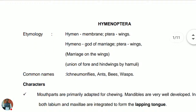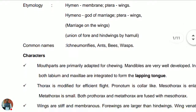Welcome dear friends. The order today is Order Hymenoptera, where the meaning of 'hymen' is membrane and 'ptera' means wings, so it becomes Hymenoptera. A second definition is 'Hymeno' meaning god of marriage and 'ptera' meaning wings, so Hymenoptera depicts god of marriage — or union of fore and hind wings by hamuli, which is the wing coupling apparatus of members of Hymenoptera.